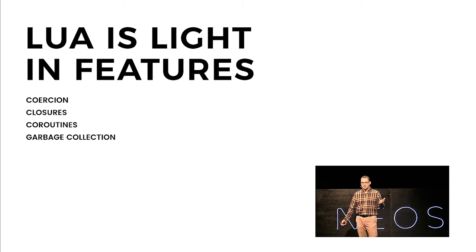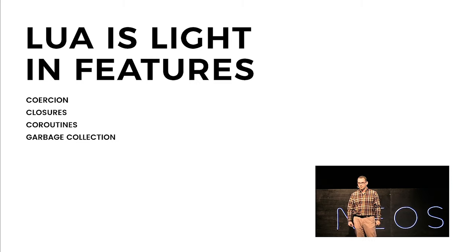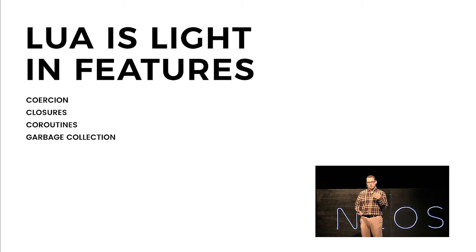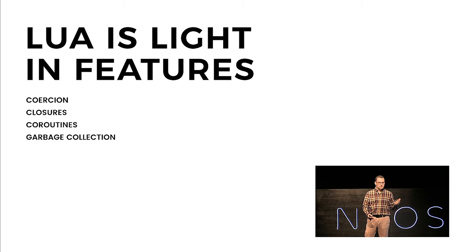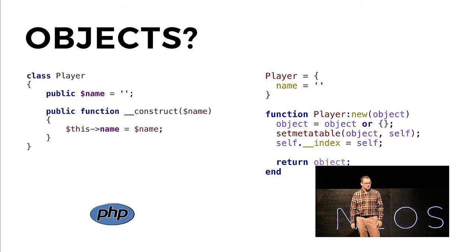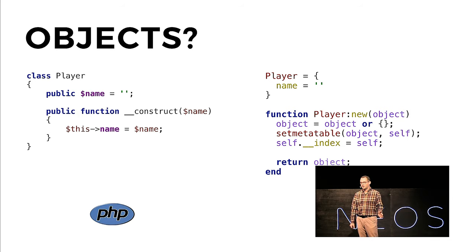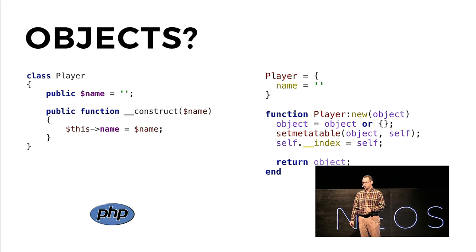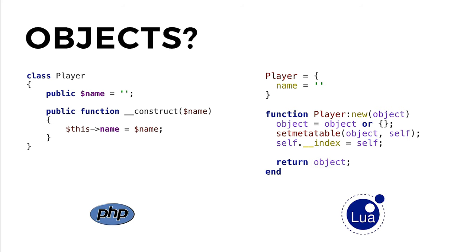You also have coroutines for threads and all that fancy stuff, and good garbage collection. At first glance, if you look at Lua, you could say, hey, you mentioned object-oriented programming in Lua, but there are no classes, no namespaces, no inheritance. So let's look at how to create a class in PHP and how to create it in Lua. It does look a little complex at first, but with use of meta tables, you can actually get that.